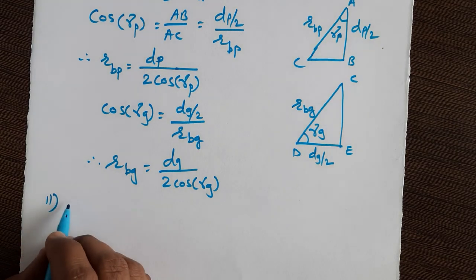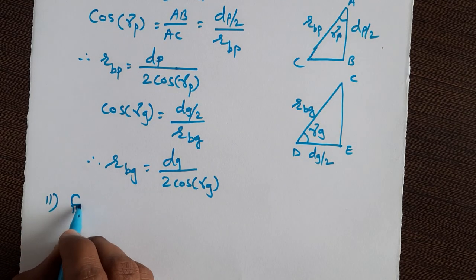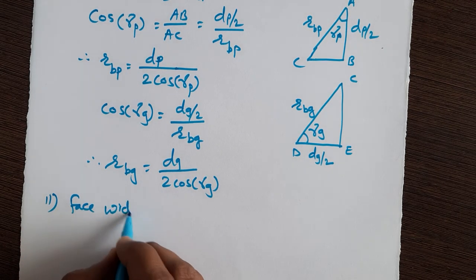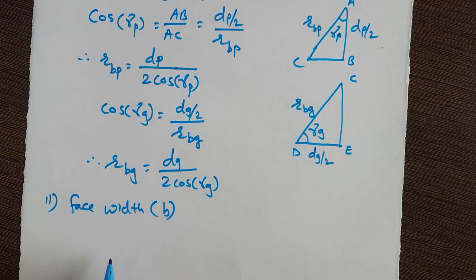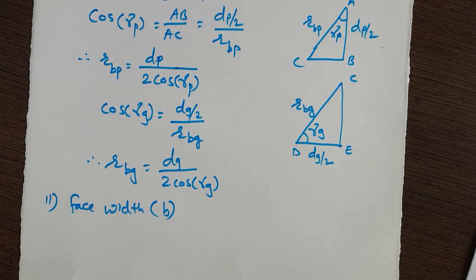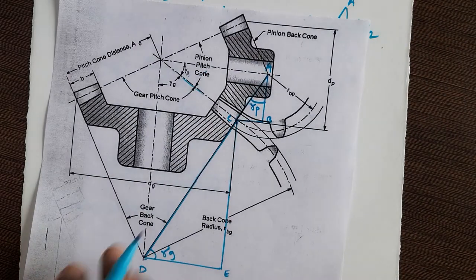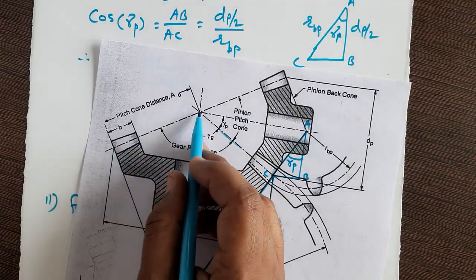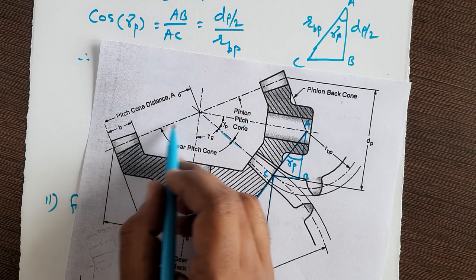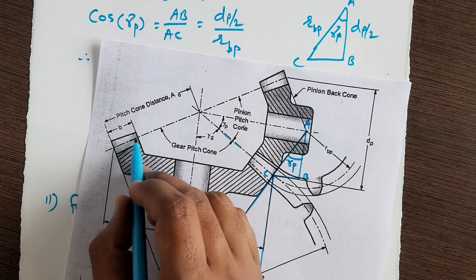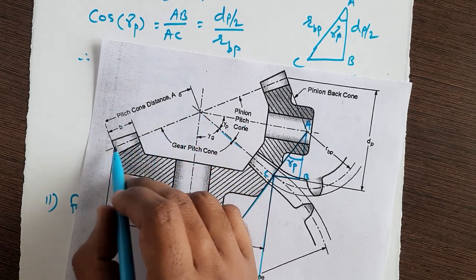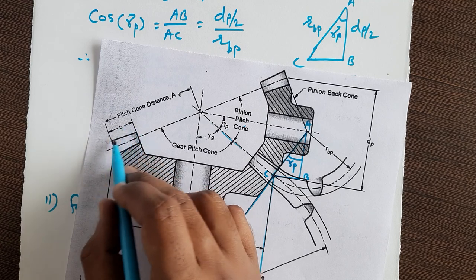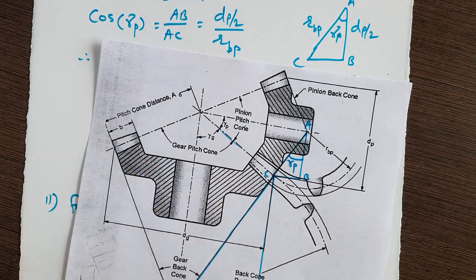The next term is face width, denoted by small b. Face width is the length of the gear teeth measured along the pitch cone elements. These are the pitch cone elements, and the length b is measured along them.